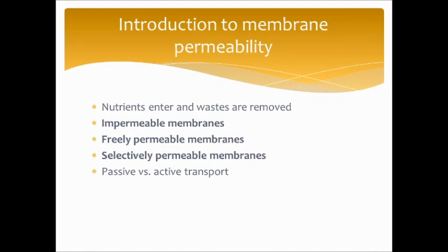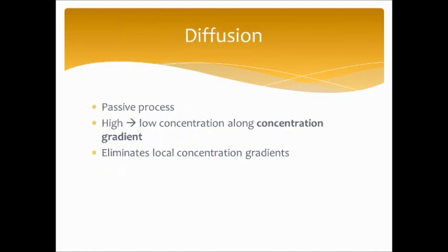Diffusion is a passive process — it goes from high to low concentration along a concentration gradient. The high-to-low concentration refers to the amount of solutes on either side of the plasma membrane. If a solute is polar and able to freely cross the membrane without needing a carrier or channel, and there's a lot of that solute on the outside and not a lot inside, it will move across the membrane to allow for dynamic equilibrium between the intracellular and extracellular environments.